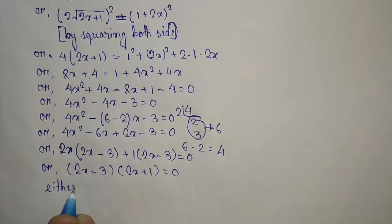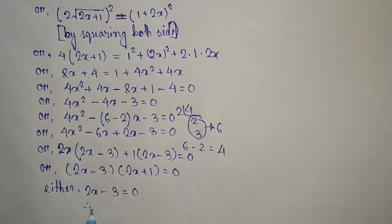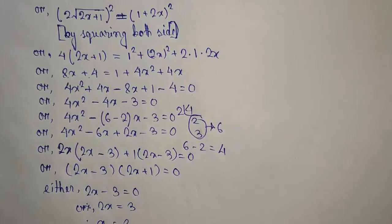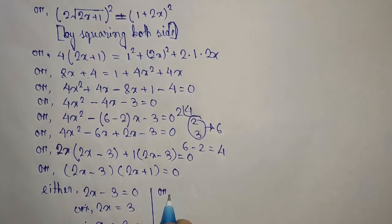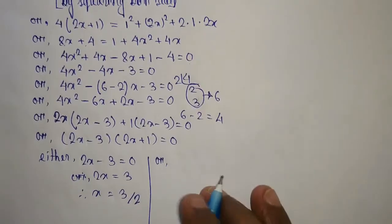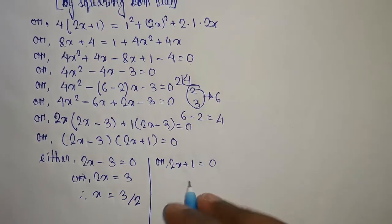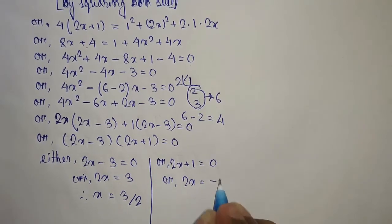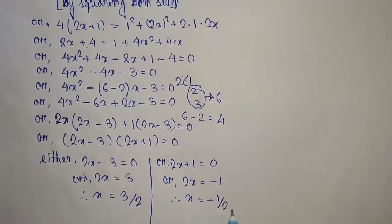From (2x minus 3) = 0, we get 2x = 3, therefore x = 3/2. From (2x + 1) = 0, we get 2x = minus 1, therefore x = minus 1/2.